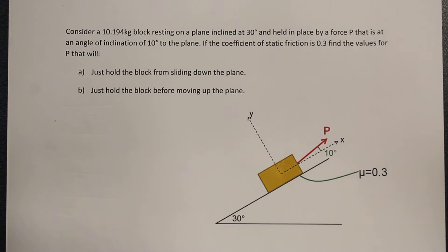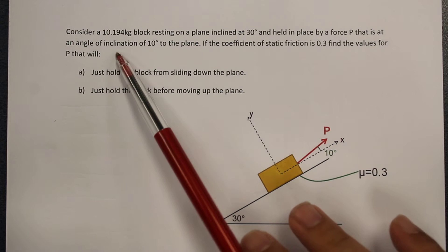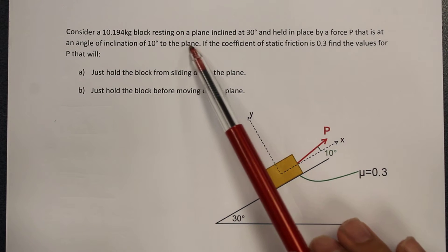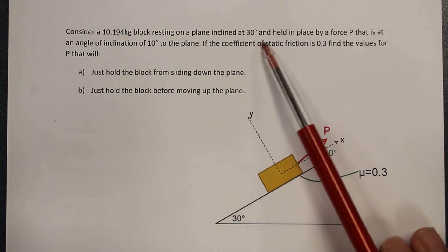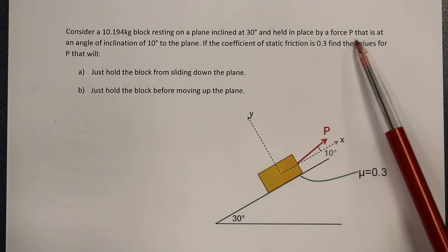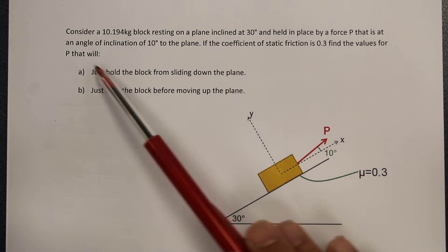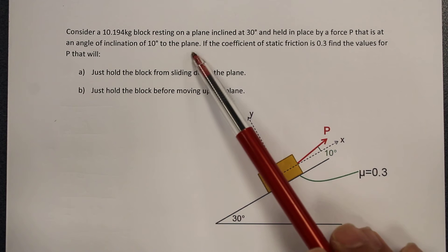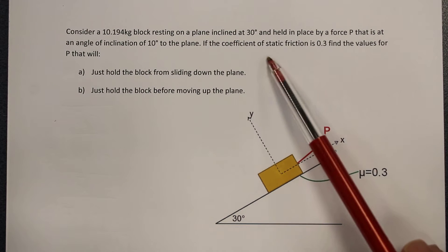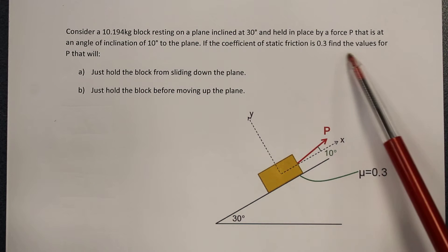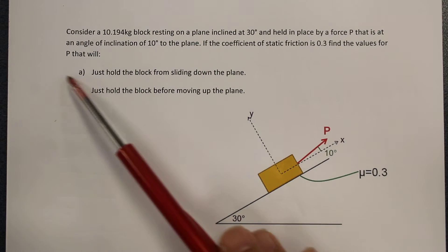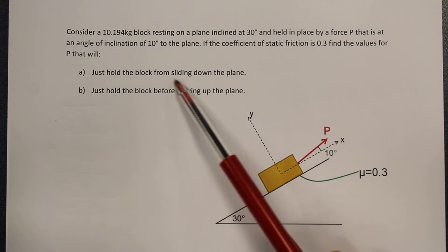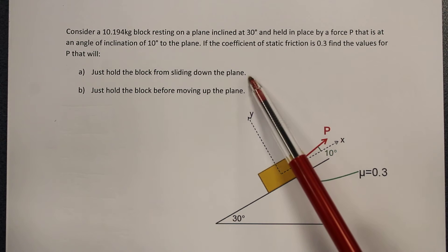Hey guys, this is a video to go through this question here. We're just going to be looking at part B. The question reads: consider a 10.194 kg block resting on a plane inclined at 30 degrees. It's held in place by a force P, which is at an angle of inclination of 10 degrees to the plane. If the coefficient of static friction is 0.3, find the values for P that will just hold the block from sliding down the plane.